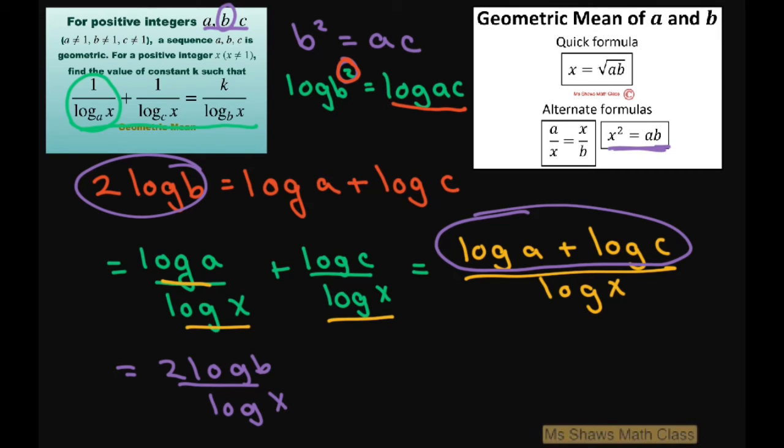So basically reverting back to what it looks like here, I'm going to use the change of base formula and go back. So this is going to equal 2 times 1 divided by log base b of x, or 2 divided by log base b of x.